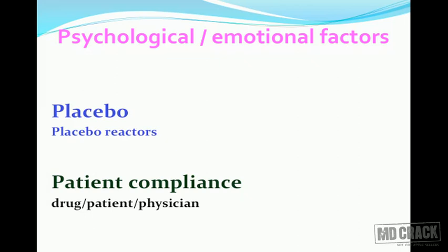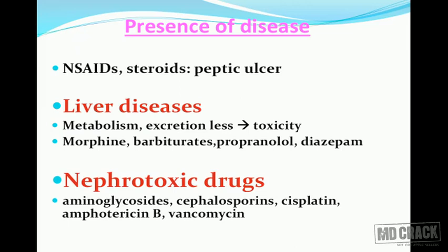Patient compliance is decided by the kind of drug, the kind of formulation prescribed, the personality of the patient and the environment, and the personality of the physician and his ability to explain things. Presence of disease is another important factor — NSAIDs and corticosteroids can precipitate peptic ulcer. If the patient already has liver disease, the drug is likely to be metabolized and excreted less, leading to toxicity. Morphine, barbiturates, propranolol, and diazepam are particularly relevant in liver disease.